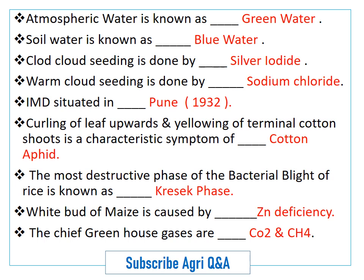Atmospheric water is known as green water. Soil water is known as blue water. Cold cloud seeding is done by silver iodide. Warm cloud seeding is done by sodium chloride.